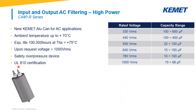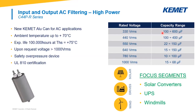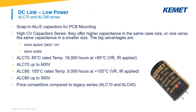For high-power applications, the preferred solution is screw mounting. Here, KEMET has a new series called the C44PR series. Rated voltage goes from 330V RMS up to 1000V RMS. Capacitance range goes from 15µF to 600µF. One of the focus segments for this product is UPS, but also solar converters.